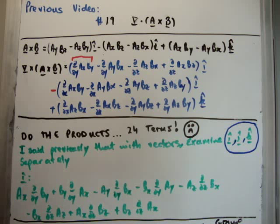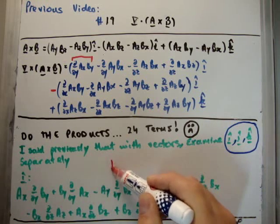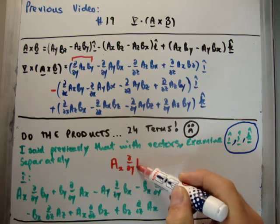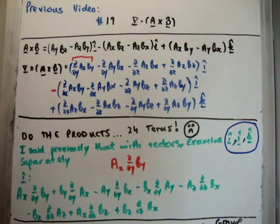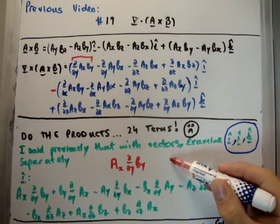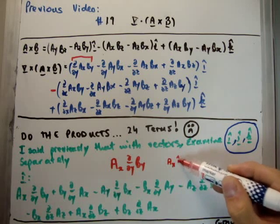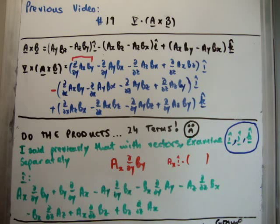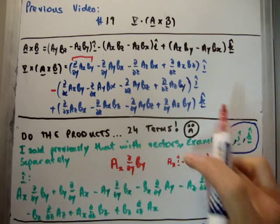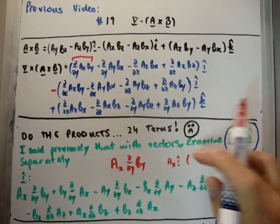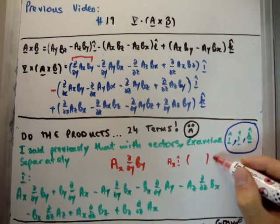I've rewritten all eight terms in the i-hat direction having done the product rule. The question is how do we possibly simplify this? Let's look at the first term: we have a sub x times del/del y of b sub y. In a previous video, if this was a scalar I would have said that looks like a dot product, but because it's a vector we're after getting back a vector, so it can't be a dot product. It looks to me to be a multiplication — a sub x in the i-hat multiplied by something also in the i-hat direction.